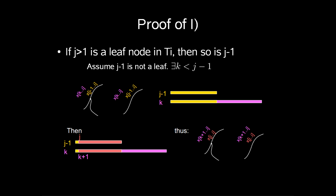So we start with if j larger than 1 is a leaf node in Ti, then so is j minus 1. So we prove this by contradiction. We assume j minus 1 is not a leaf. Then there exists a k less than j minus 1 such that we have j minus 1 to be a prefix of k. Well, then that would give us that j is equal to k plus 1. Thus if x[j..i] and x[k+1..i] must have the same branch or be a leaf.